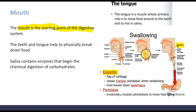Before the esophagus, we can find the pharynx. There are three types of pharynx: oropharynx, nasopharynx, and laryngopharynx. The esophagus is a muscular tube that connects the mouth to the stomach. It uses the peristalsis process to move the food from the esophagus into the stomach. The lower esophageal sphincter prevents stomach acid from entering the esophagus. An important term to remember about the esophagus is the peristalsis process.